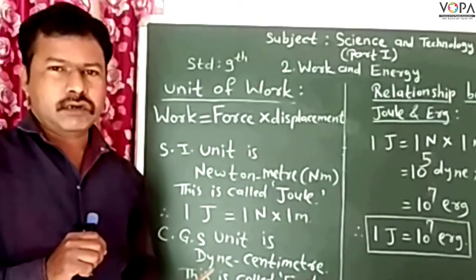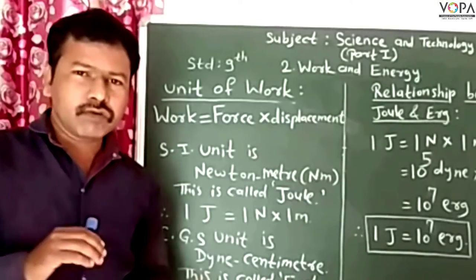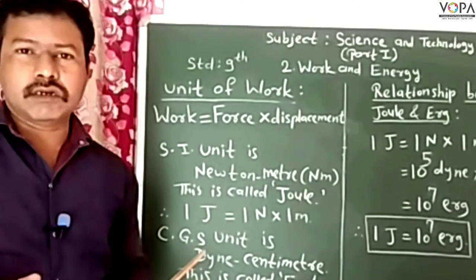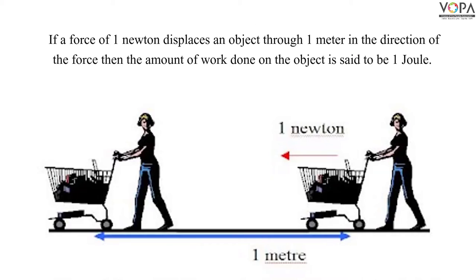Newton-meter is called a Joule. So we can write: 1 Joule is equal to 1 Newton into 1 meter. How can we define 1 Joule? It's very simple — if a force of 1 Newton displaces an object through 1 meter in the direction of the force, the amount of work done on the object is said to be 1 Joule.